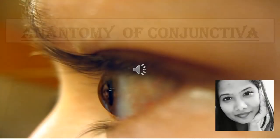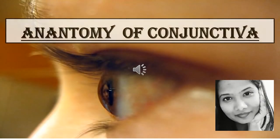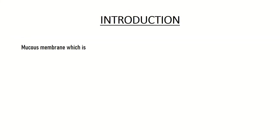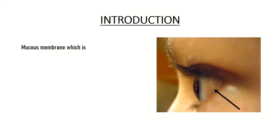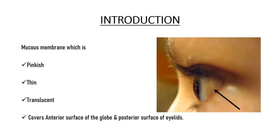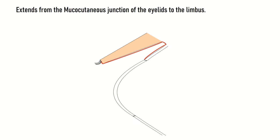Welcome to IQR Central. In today's video we will discuss the anatomy of conjunctiva. Conjunctiva is a mucous membrane covering the eye, which is pinkish, thin, and translucent. It covers the anterior surface of the globe as well as the posterior surface of the eyelids. The conjunctiva extends from the mucocutaneous junction of the eyelids to the corneoscleral junction, which is known as the limbus.